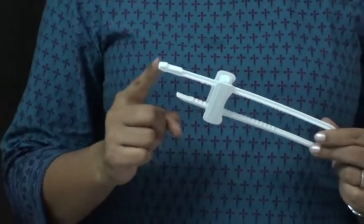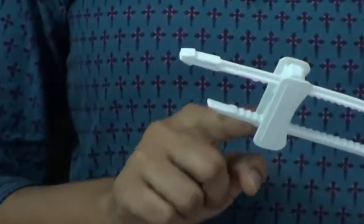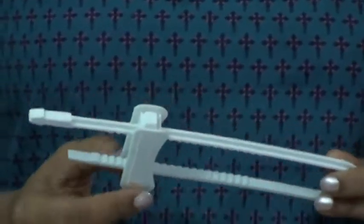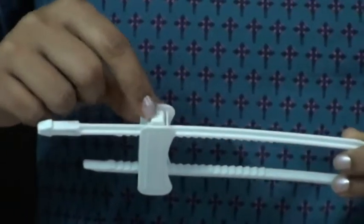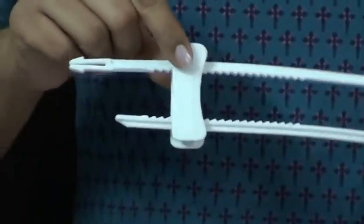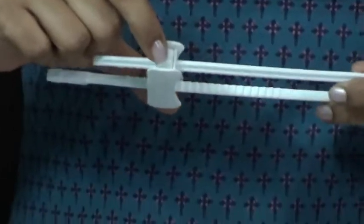As you can see, one end is shorter than the other and there is a center locking mechanism. On one end you can see a small square button and there's a similar one on the other end.